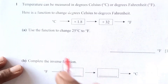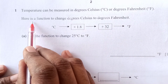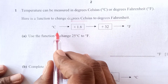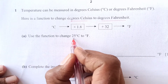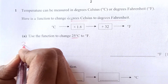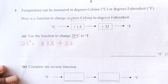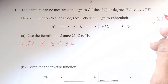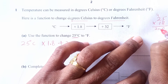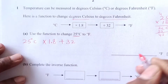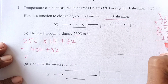Here we have a different question. Temperature can be measured in degrees Celsius or Fahrenheit. The function to convert Celsius to Fahrenheit is: C times 1.8 plus 32. To convert 25 degrees Celsius: 25 times 1.8 plus 32. Calculating 25 times 1.8 gives 45 — wait, let's compute: 25 times 18 is 450, so 25 times 1.8 is 45.